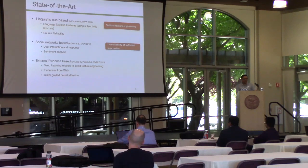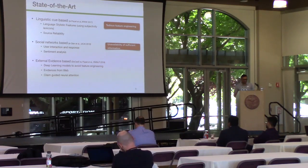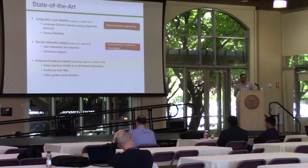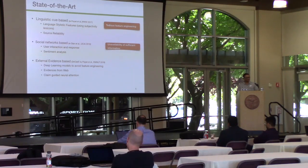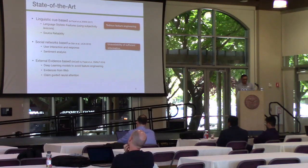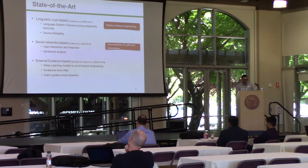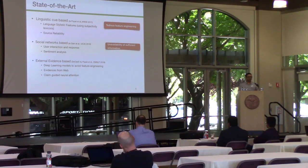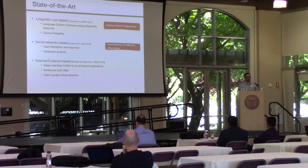The next set of work deals with social context. On top of the content of the news, they use social context to learn some evidence — essentially capturing user interaction with the news such as user comments, replies, likes and dislikes, and sentiments. But the problem with this approach is unavailability or scarcity of the information, since not every news article has user interactions. The third set of work, which is pretty recent, tries to use external evidence by searching the web and getting results, filtering them based on some filtration technique, and using those results as external evidence.